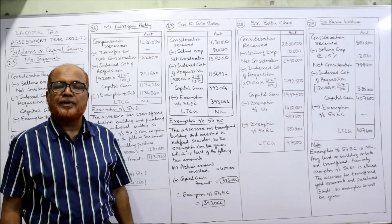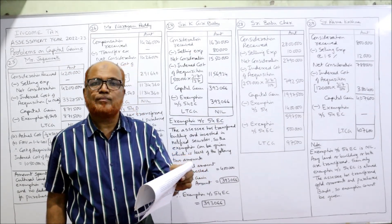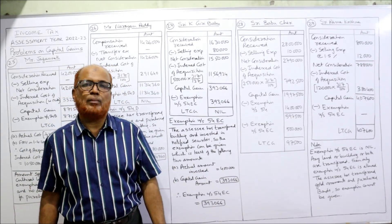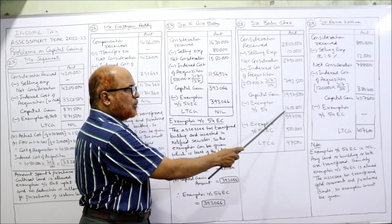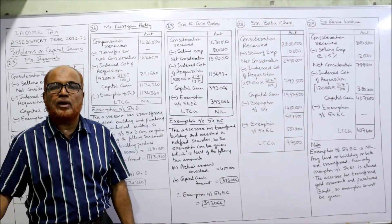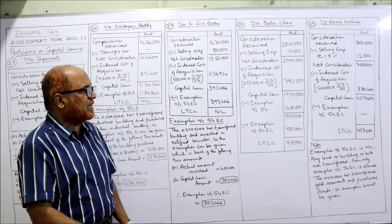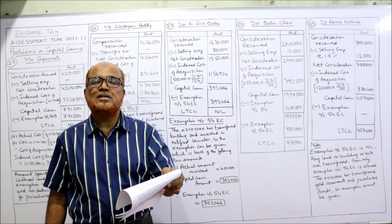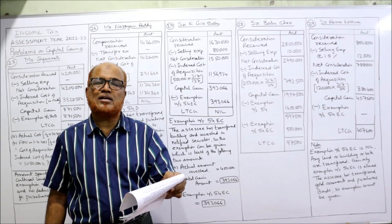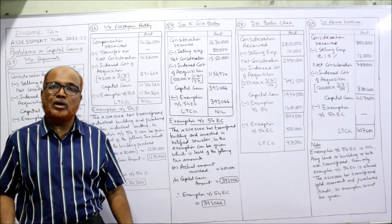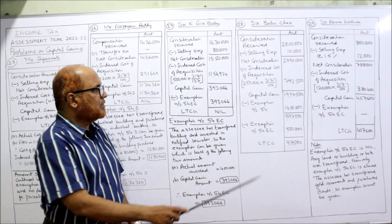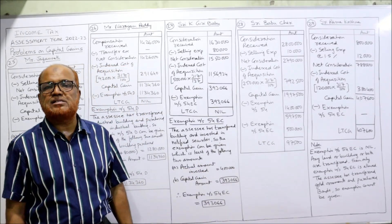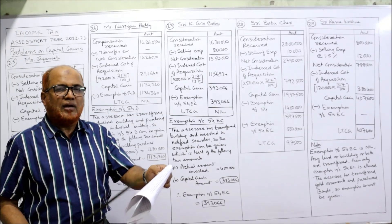He has invested 5 lakh rupees in bonds of NHAI and purchased a new house for 14 lakh. He sold one residential house and purchased another residential house, so exemption under Section 54 is allowed: 14 lakh is the cost of the new residential house. Apart from that, he invested 5 lakh rupees in NHAI bonds, which are specified securities under Section 54EC, so he also gets exemption under Section 54EC of 5 lakh. After deducting both, long-term capital gain is 97,500.